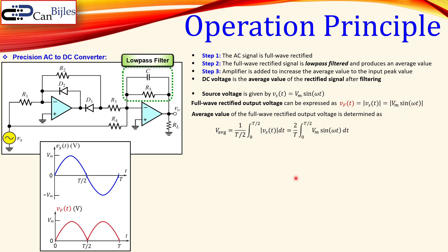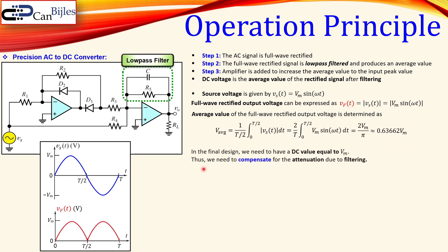This is a standard integration also common in power electronics. The result is 2Vm/π, so 2/π as a scaling factor times Vm, which is approximately 0.63662 — that is, about 63.7% of the input peak value appears at the output as the average. In the final design we need DC output equal to Vm, so we must compensate for this attenuation due to low-pass filtering.